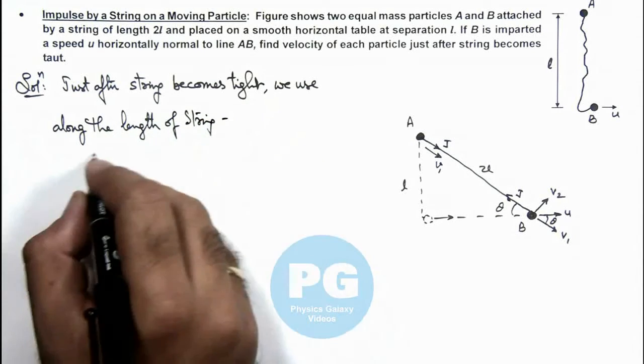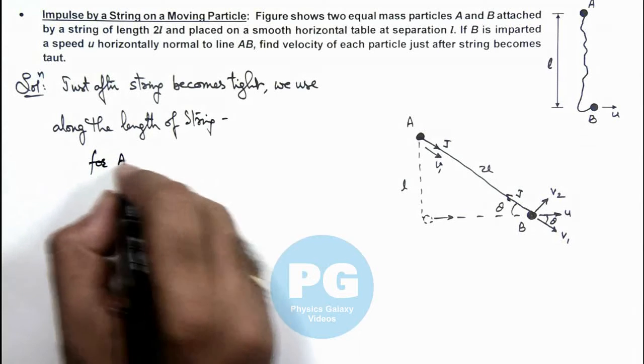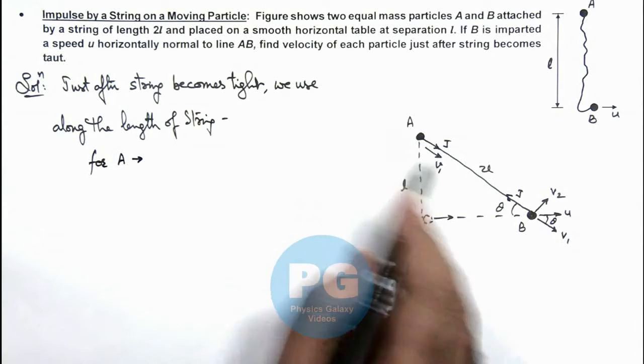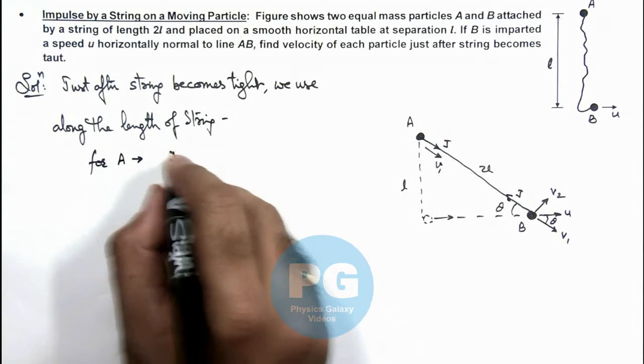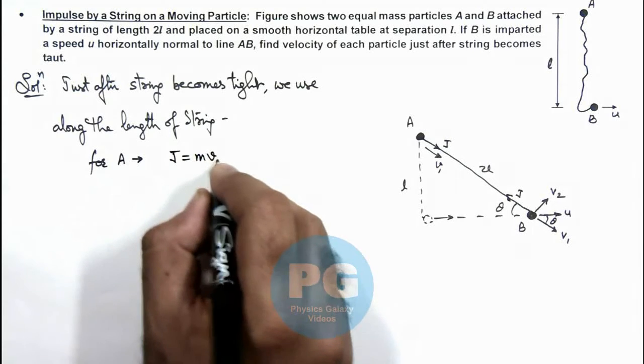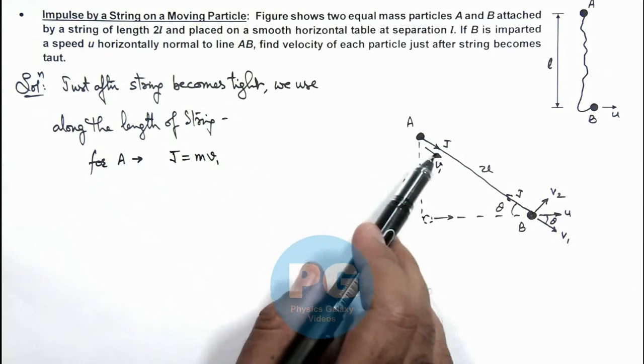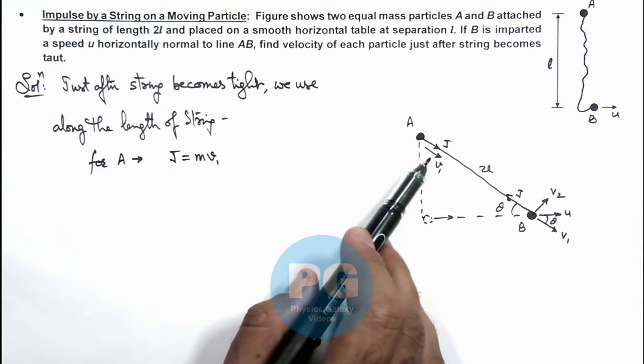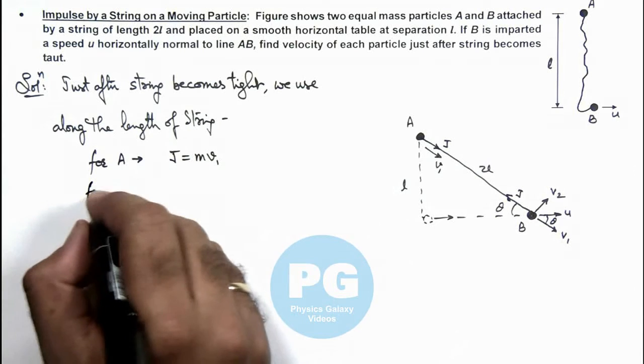Then here we can write for particle A, initially it was at rest so for this we can write J is equal to mv1, because J is the impulse which imparts a velocity v1. And similarly we talk for B.